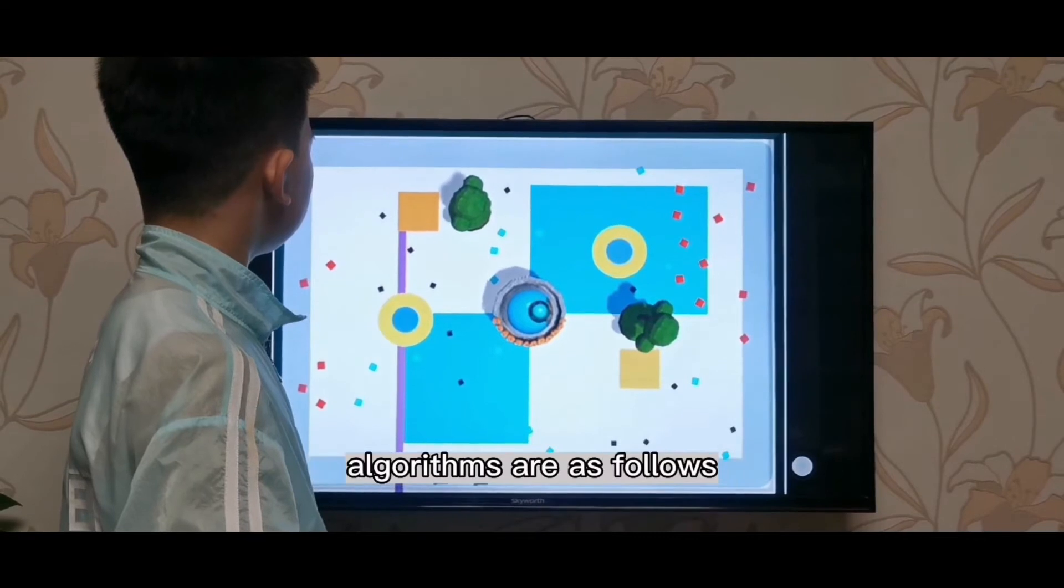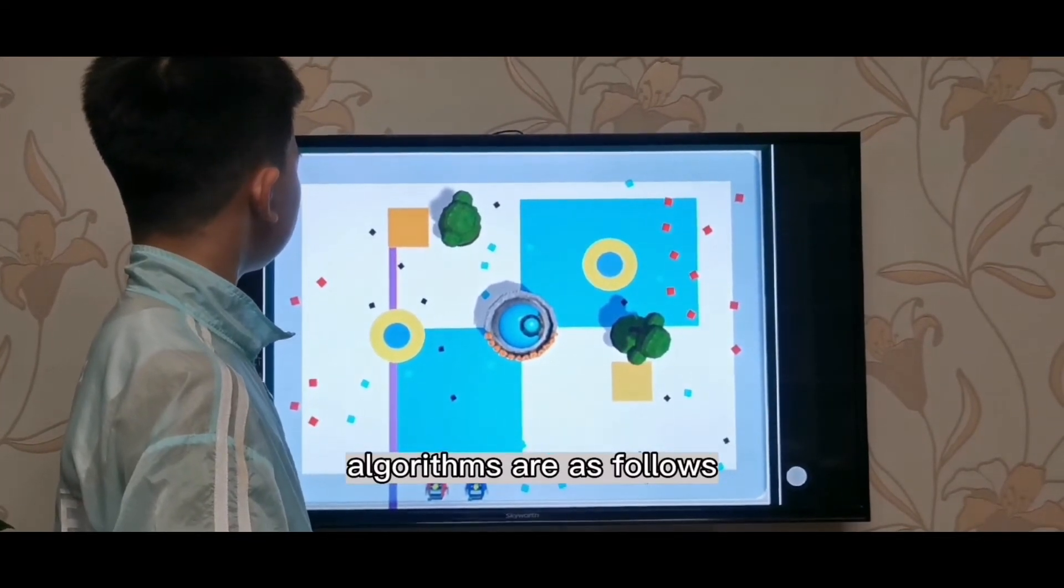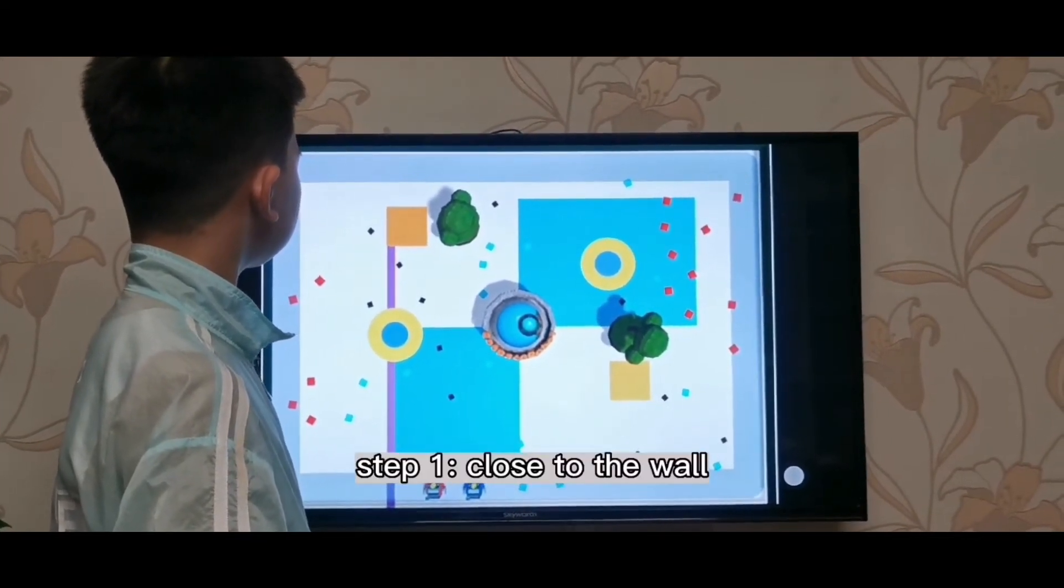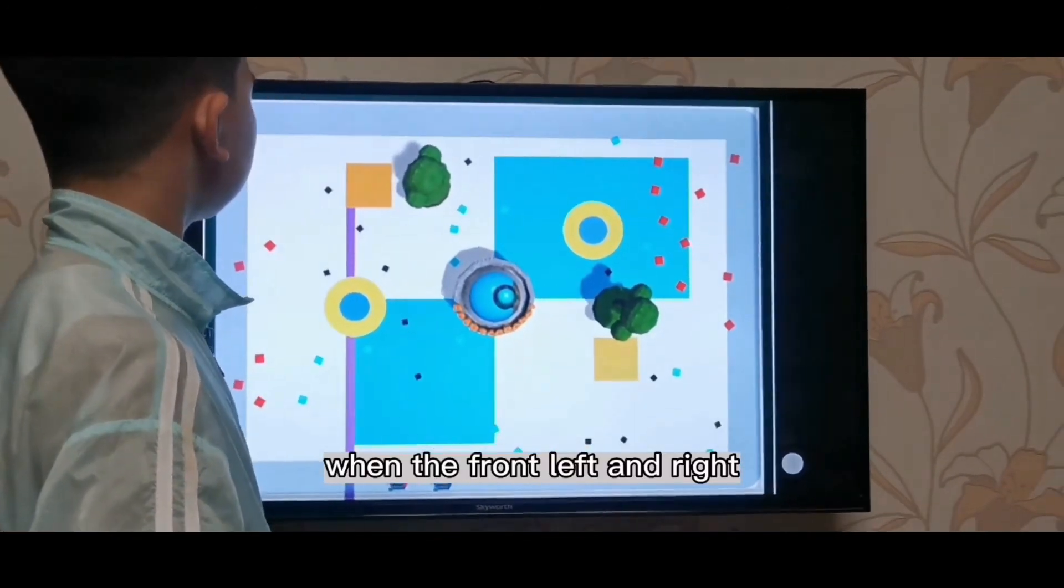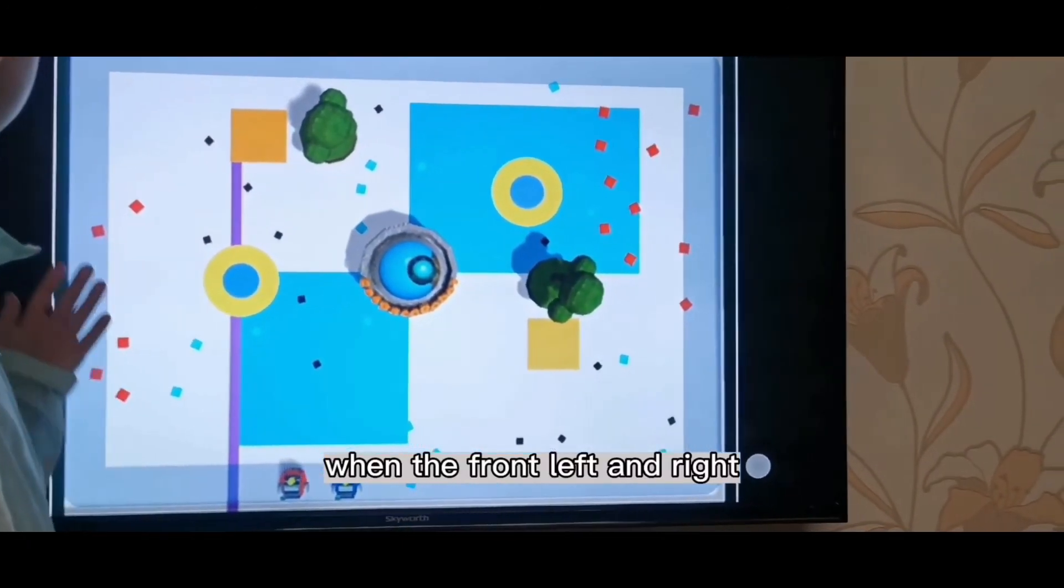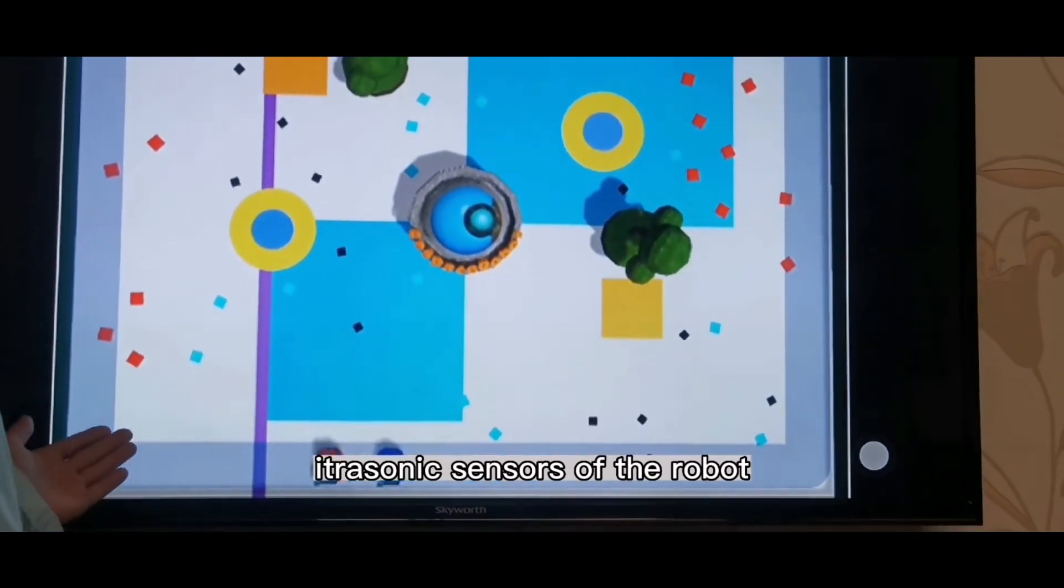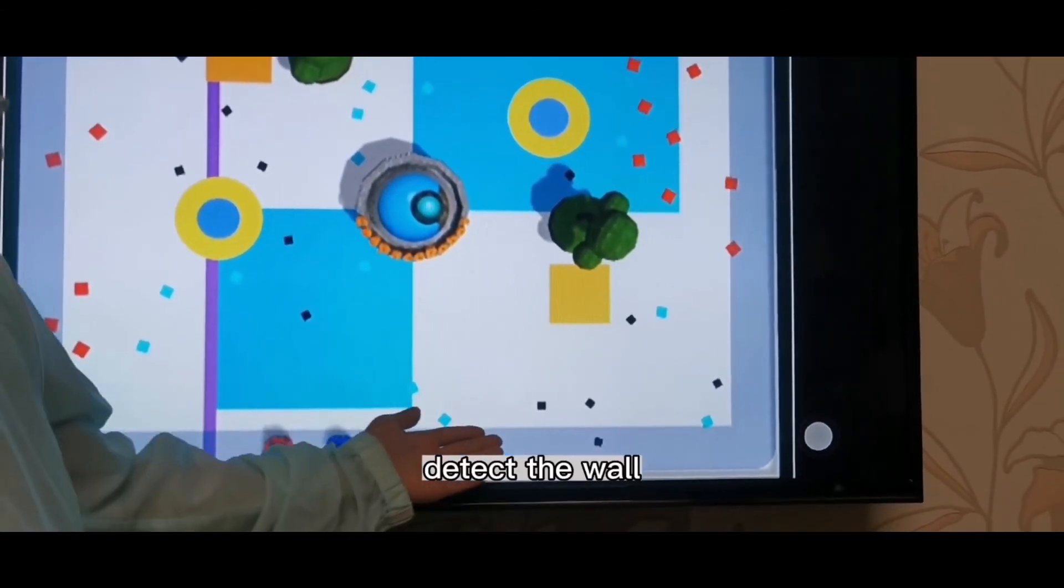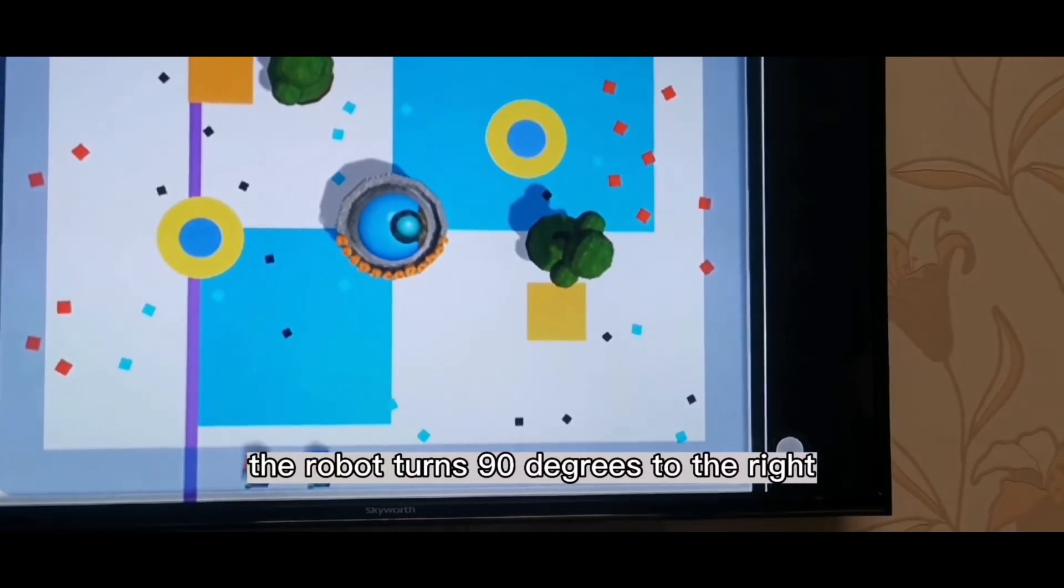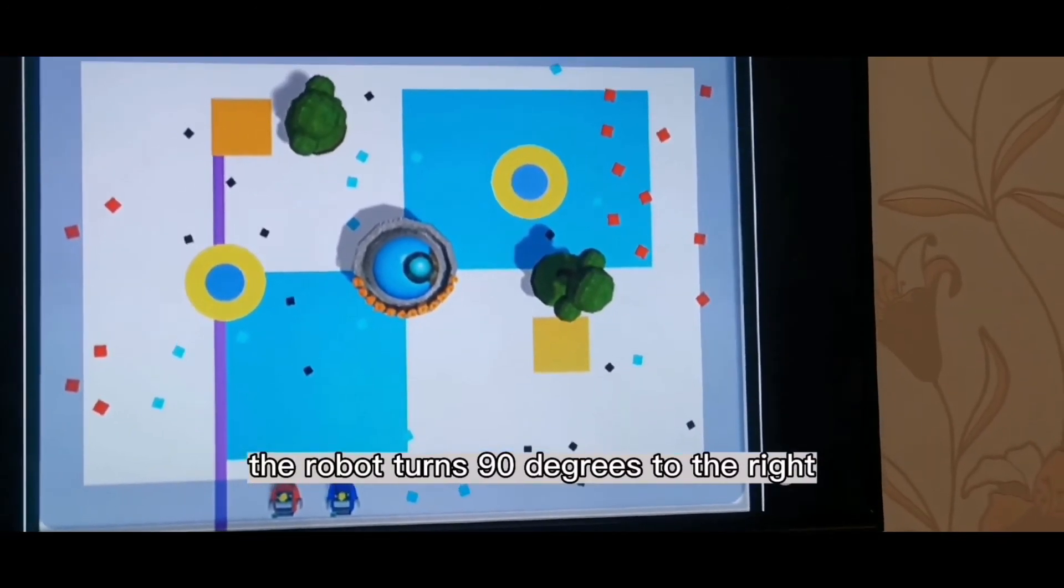The steps of the wall-following algorithm are as follows. Step 1: Close to the wall. When the front, left, and right distance sensors of the robot detect the wall, the robot turns 90 degrees to the right.